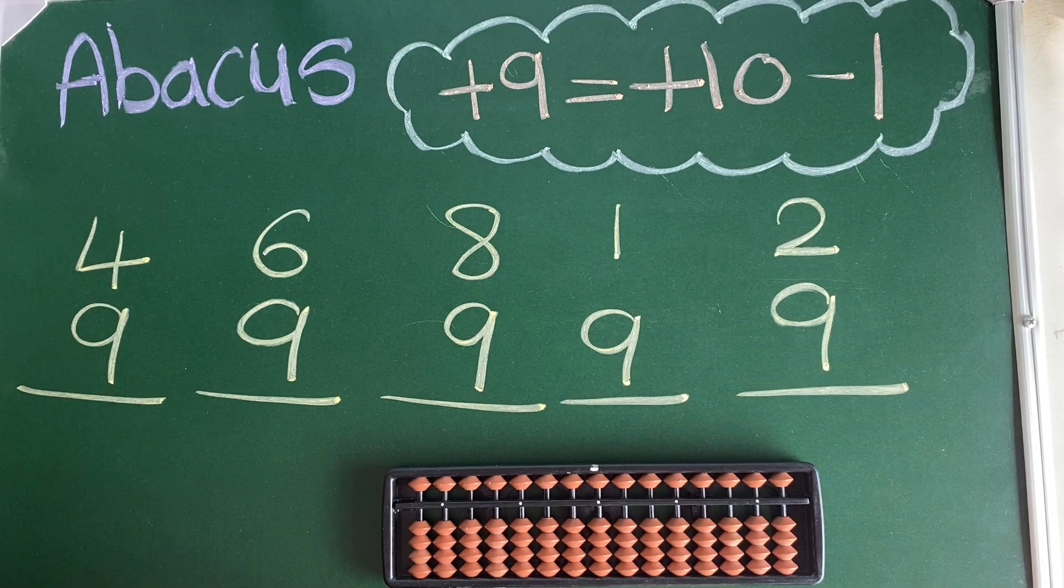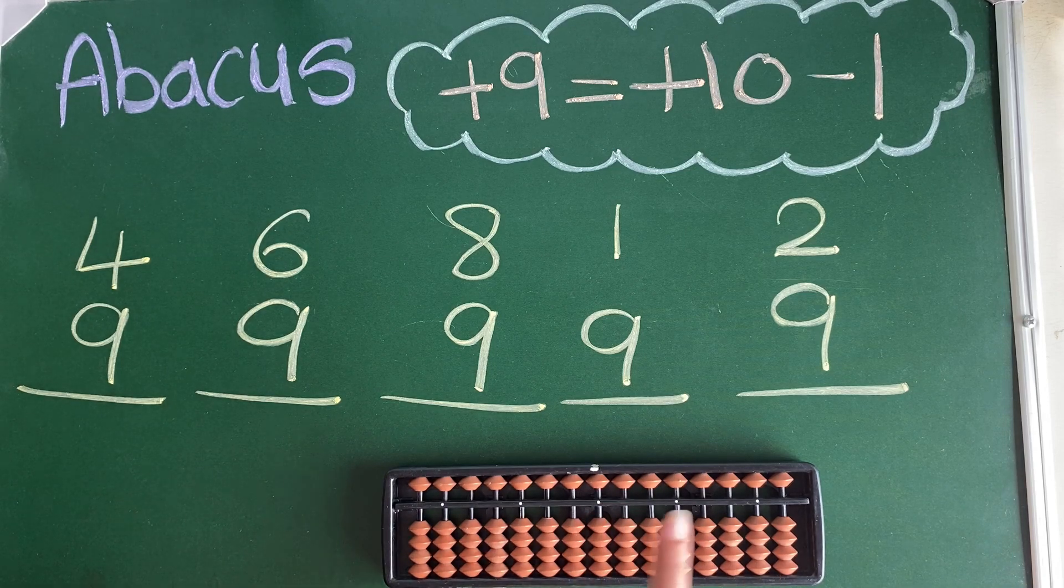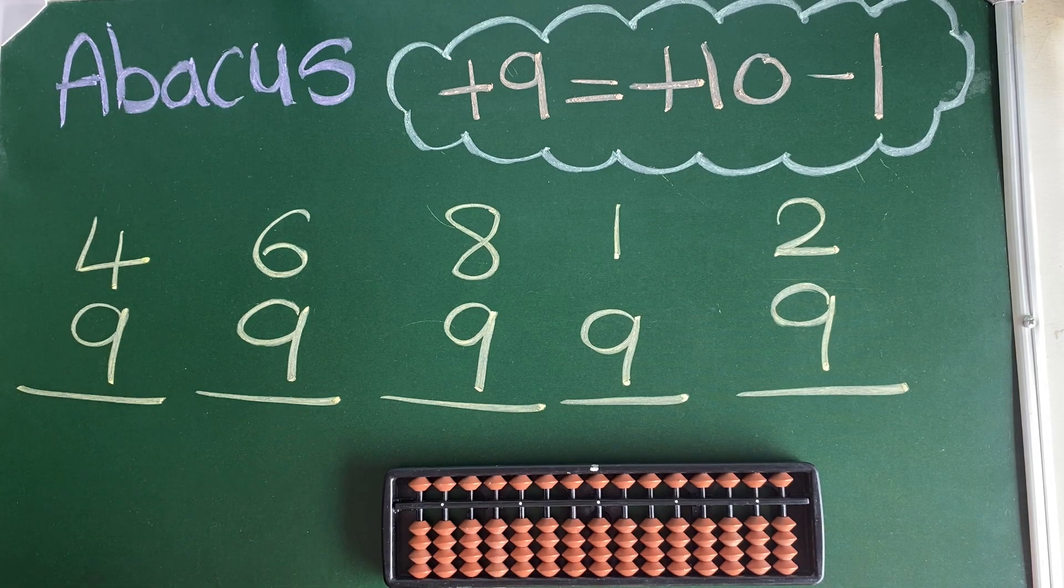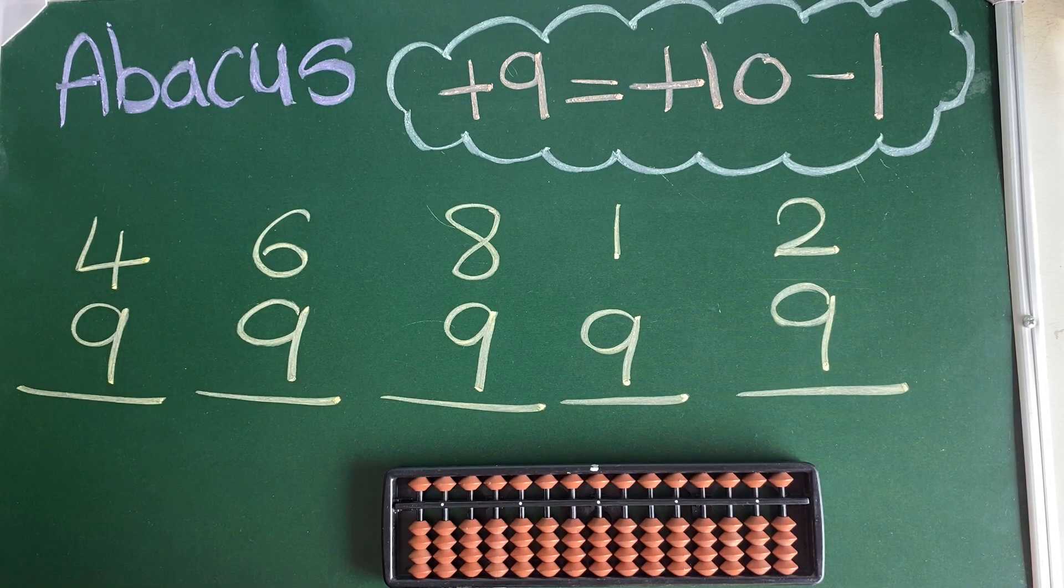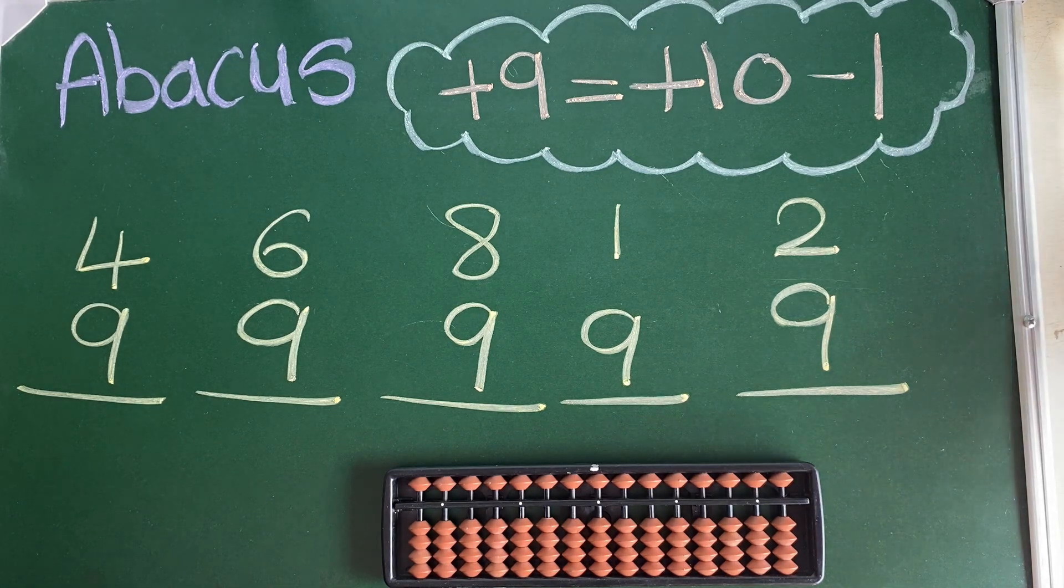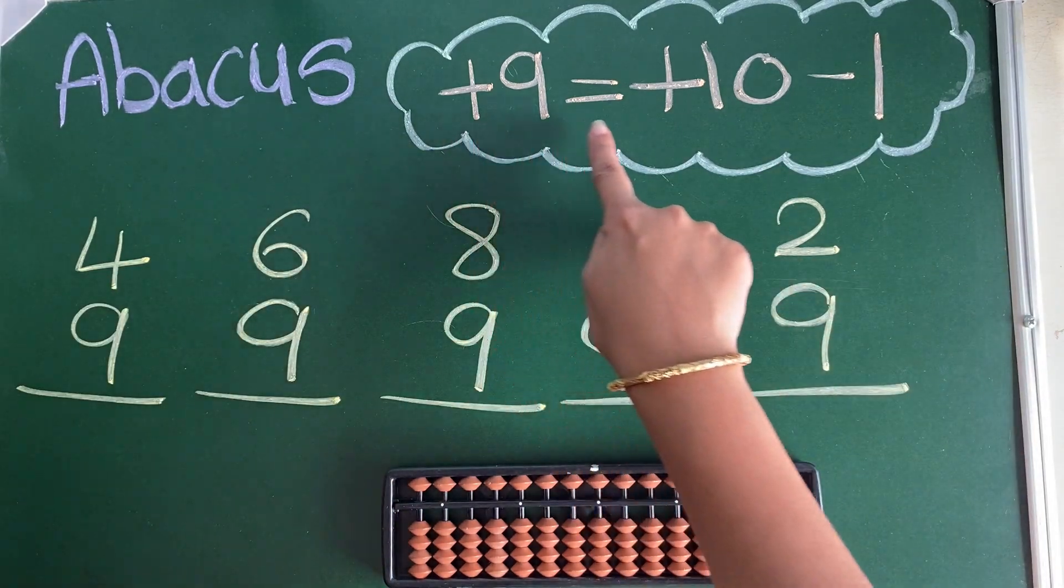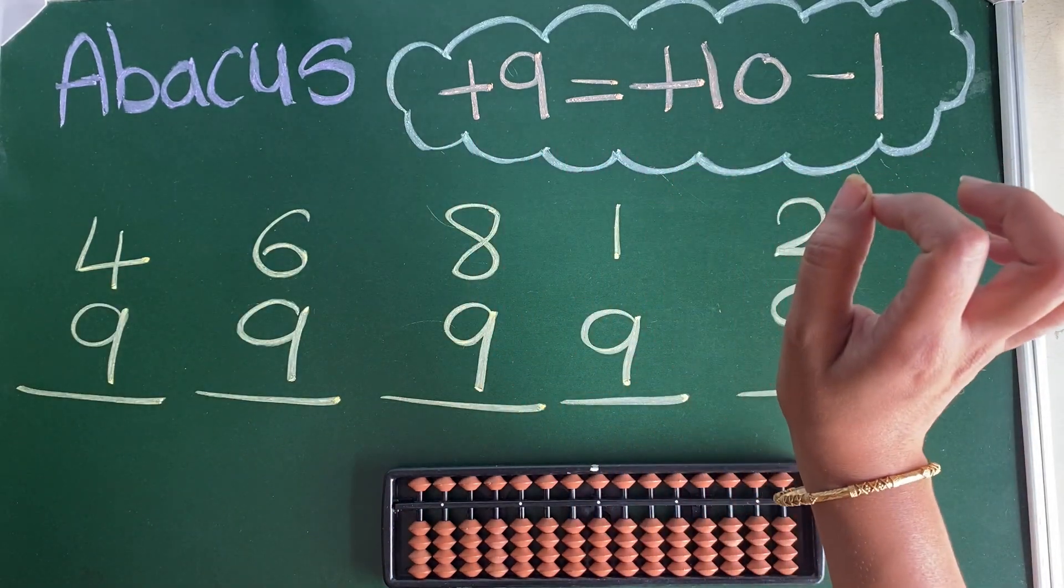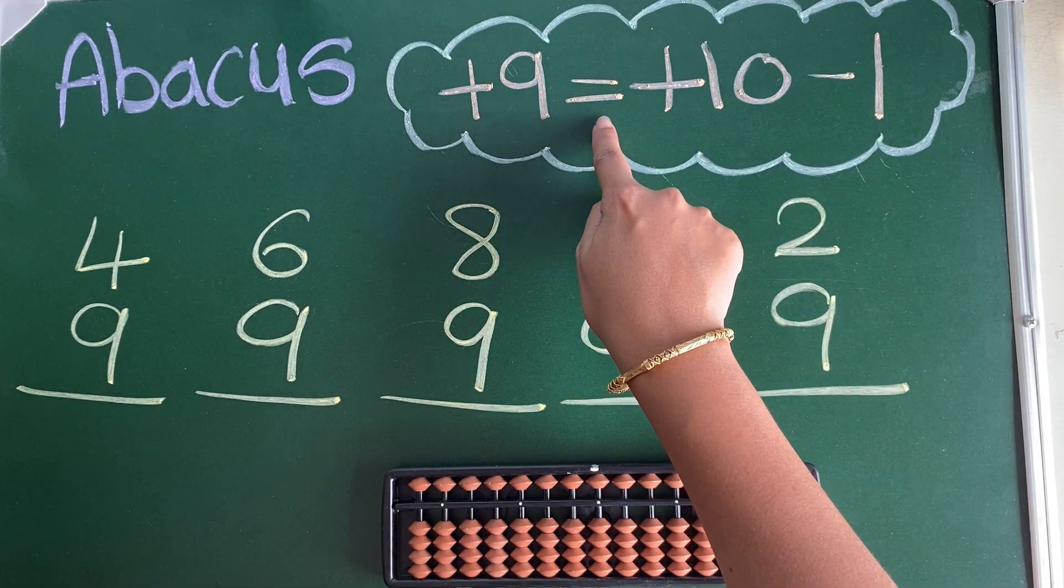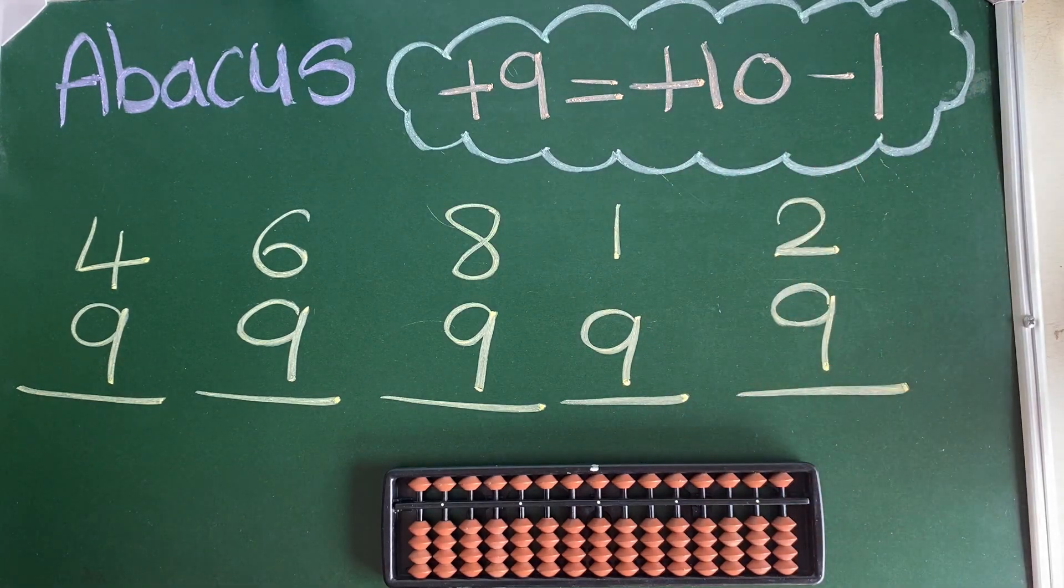In big friend concept, we are going to use two digit numbers, the answer will be two digit numbers. Let's see how we are going to solve this big friend concept. Here you can see I have given the formula of big friend concept. The first formula is plus 9 equals plus 10 minus 1.